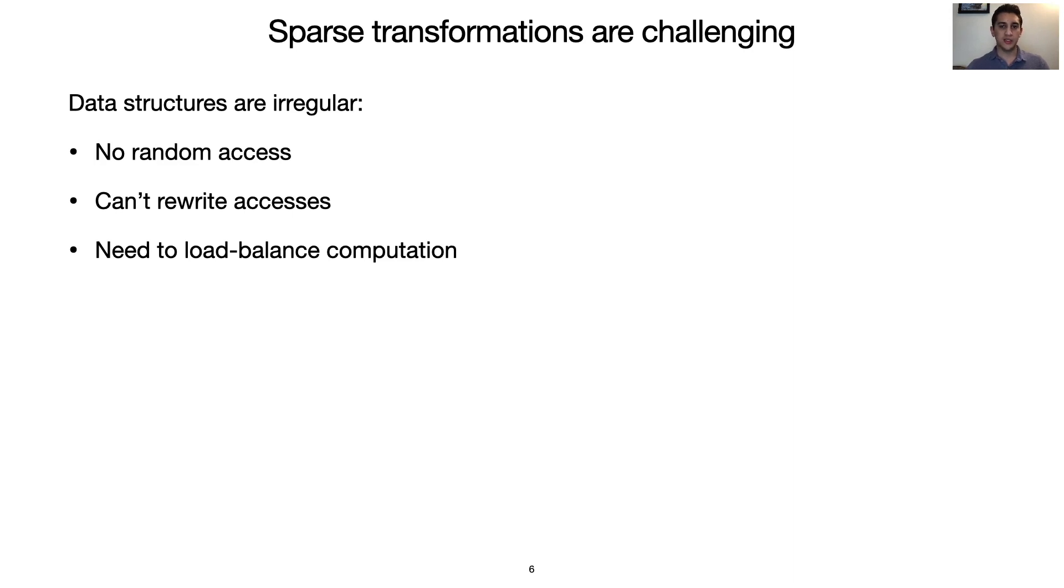The irregularity of sparse data structures imposes constraints on sparse transformations that make them more challenging than similar dense transformations. Consider a small sparse matrix. This matrix can be stored in a dense random access structure.